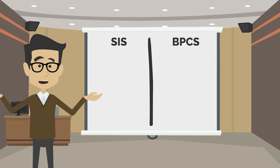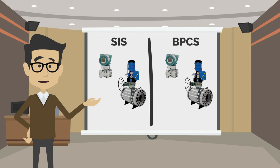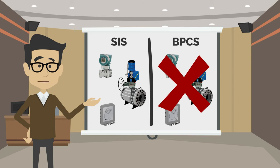The SIS should be independent from the BPCS, with separate transmitters, final elements, and an independent logic solver. Its job is to bring the process to a safe state in the event of a failure of the BPCS.